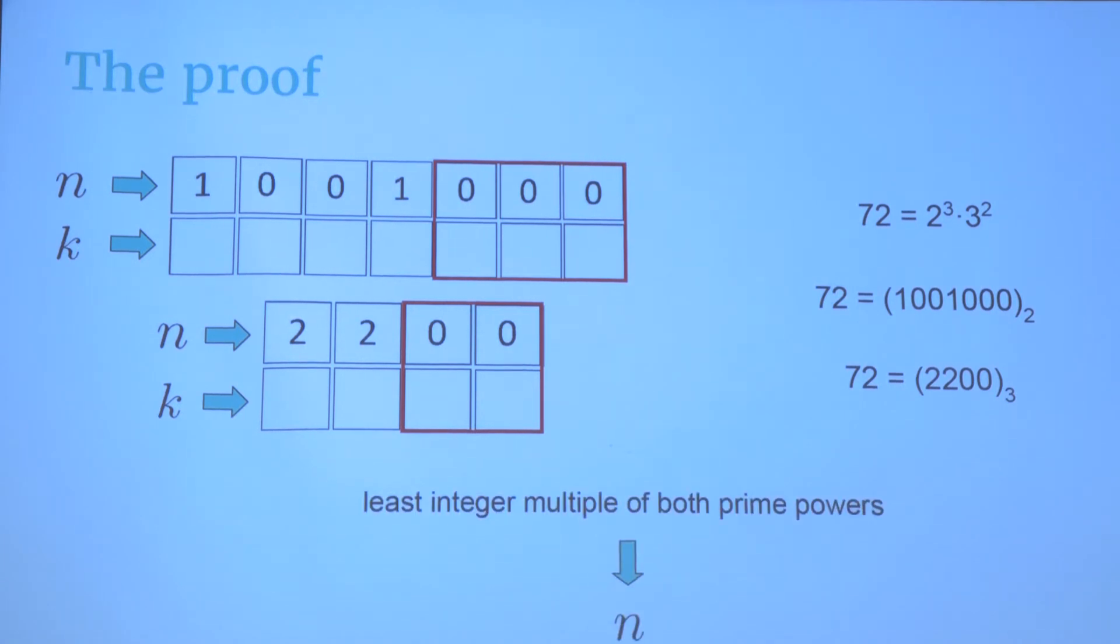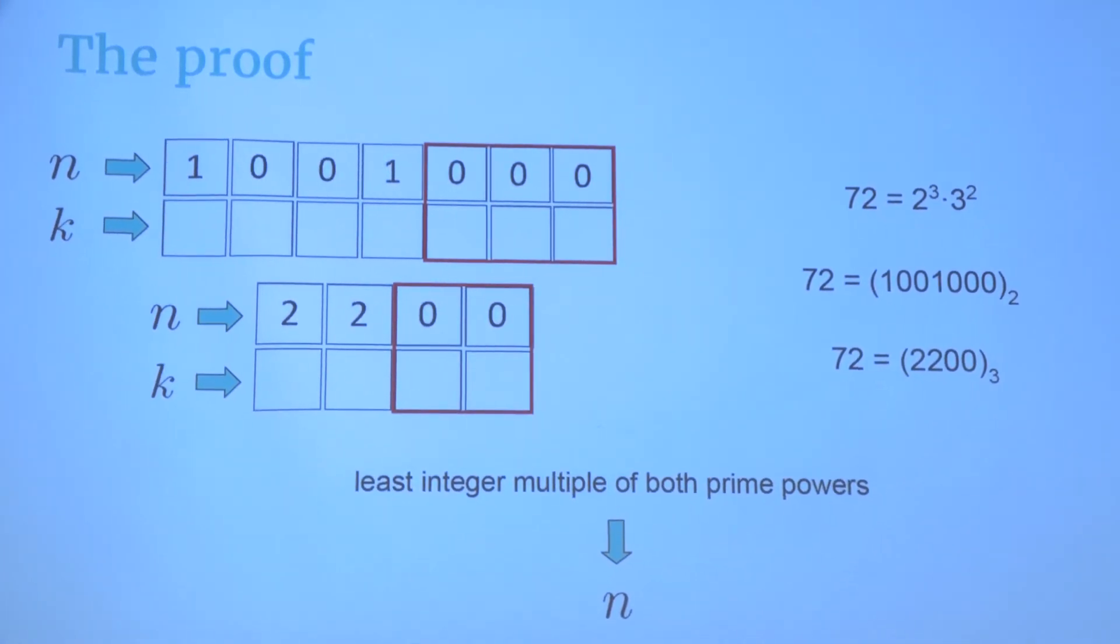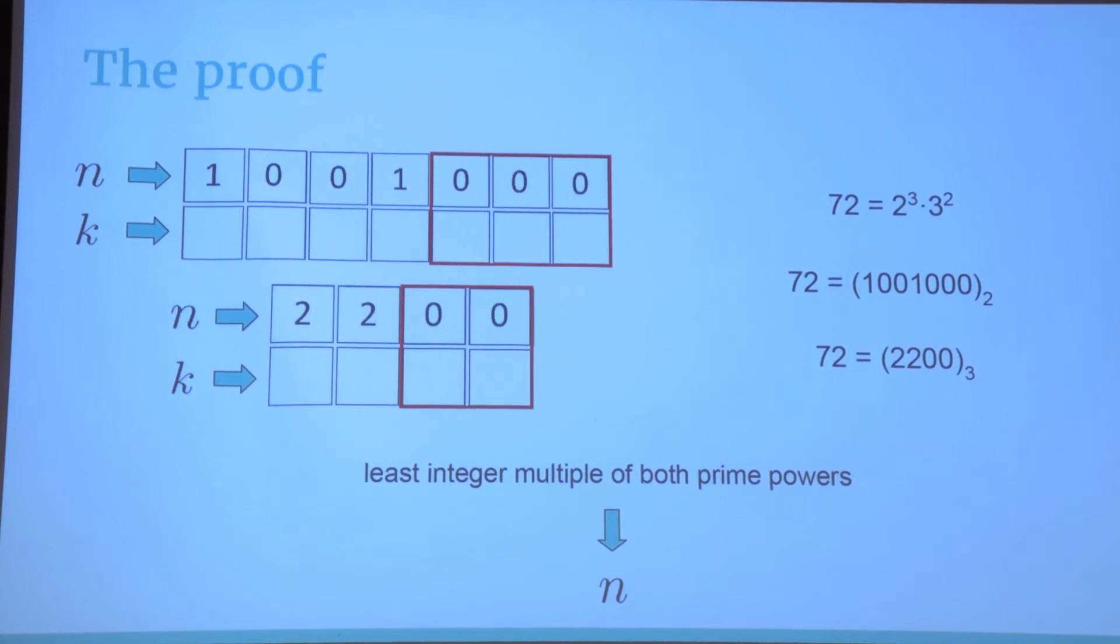We would have a problem if we could find a k, between 1 and n minus 1, that would finish also with alpha zeros in base p1 and beta zeros in base p2. But can this happen? The thing is that the minimum number that's multiple of both prime powers is n. And if k finished with alpha zeros and beta zeros, then k would also be a multiple of both p1 to the alpha and p2 to the beta. But, by definition, k is at most n minus 1. Therefore, no such k exists and the proof is complete.